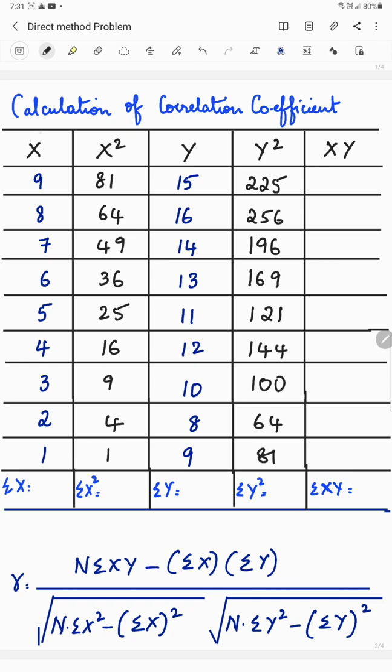164, 164, 181. And then xy. xy is x into y will give you xy. So 135, 128, 98, 78, 55, 48, 30, 16.